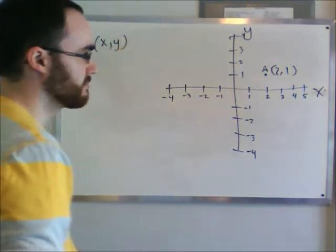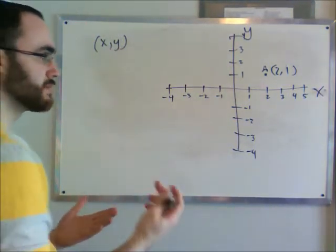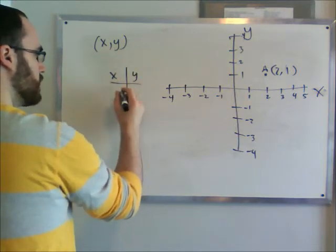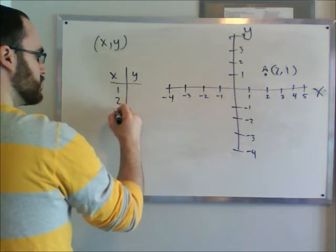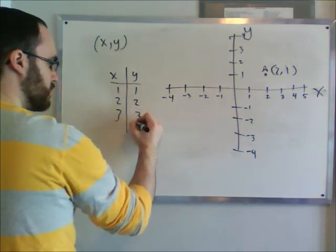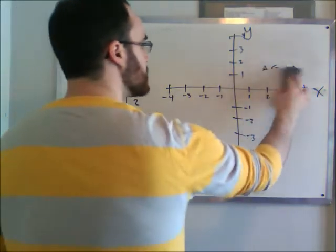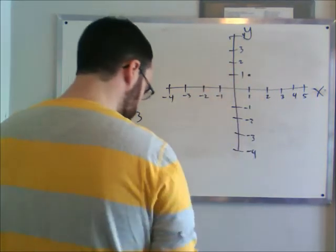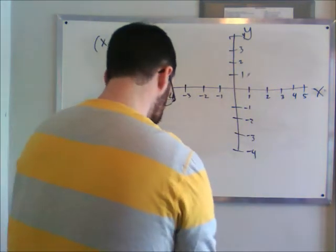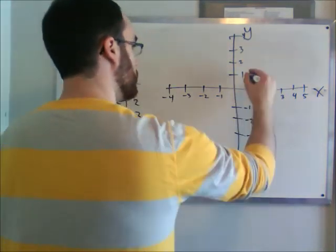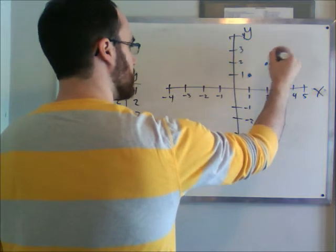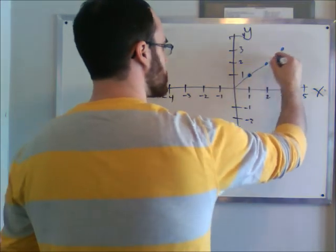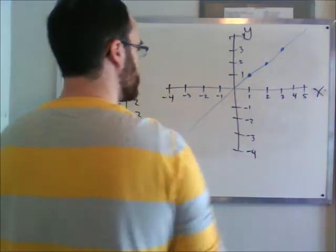That's how you plot points on a graph. You can also get a table of values. So let's say you had a table of values with x and y, where x is one, two, three, and y is one, two, three. Well, this is actually just a few points on the graph — one, one would be right here, two, two would be right here, and three, three would be right here. Which eventually, we'll talk about, will form a line, and we'll talk about how to find the points from there.